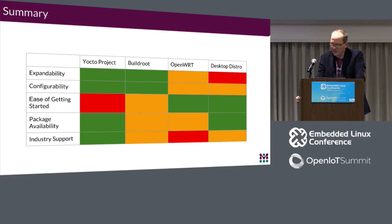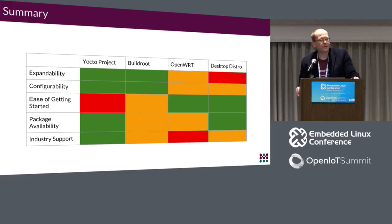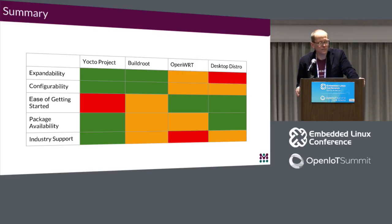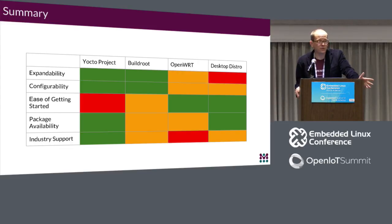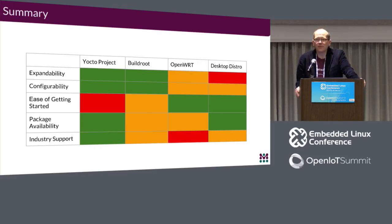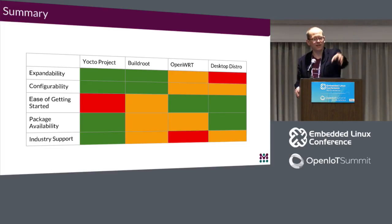Q: It seems like most boards these days have a Yocto support layer — does it make sense to use Yocto? Is there any cross-compatibility, like importing a Yocto BSP layer into Buildroot? A: A lot of commercial boards come with ready-made Yocto support from the vendor, and is there any easy way to import that into Buildroot? Not that I'm aware of. The recipes are very different, so there may be some tools that can help, but I doubt there's any explicit plug-and-play mechanism to take a BSP out of Yocto and drop it into Buildroot.